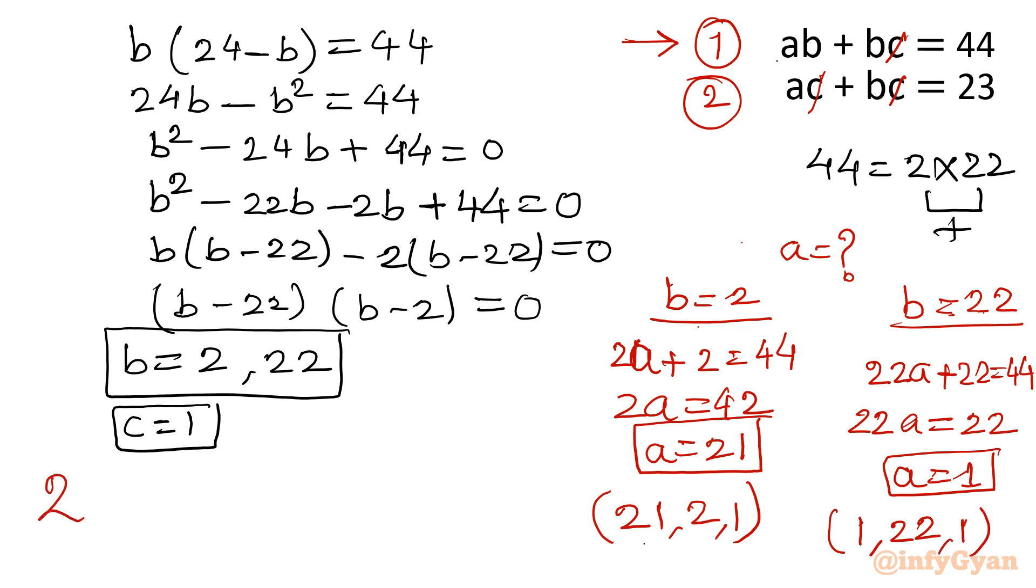So there are 2 triplets in our answer. Number 1: 21, 2, 1. Now we are going to verify it. And second is 1, 22, 1. Let us verify it.